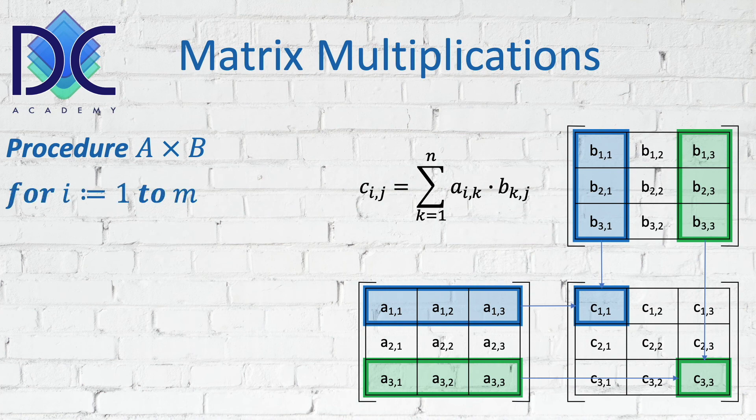So we have for the first matrix, i equals 1 to m. We go for the m rows in the first matrix, then we have Cij is set to 0, so the basic number is 0.